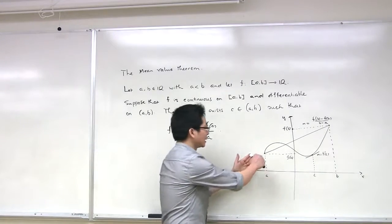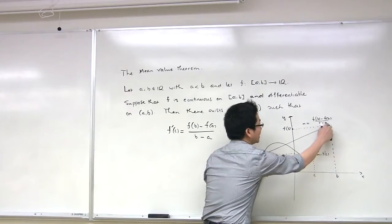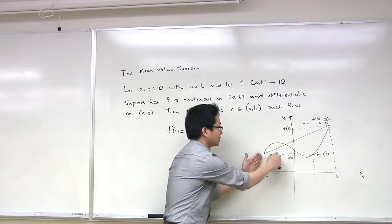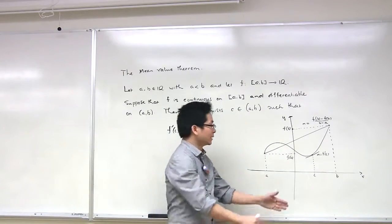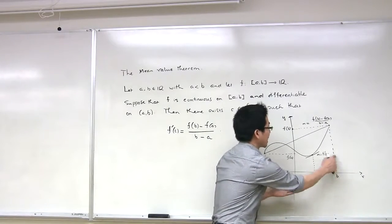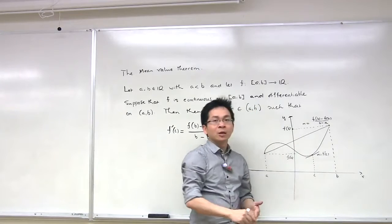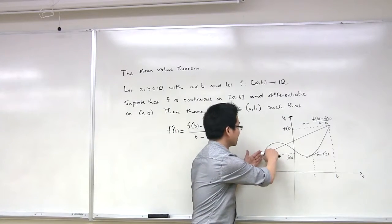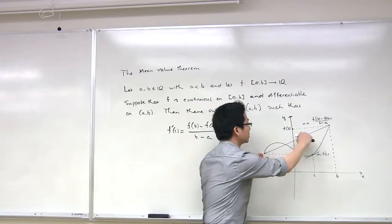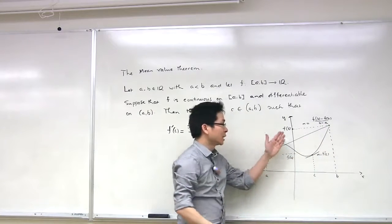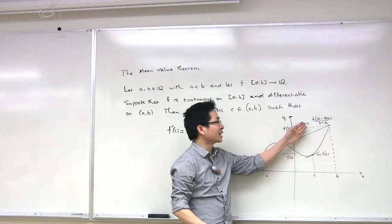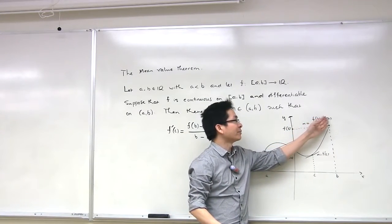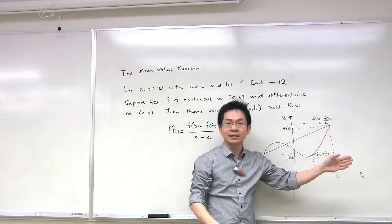This is the graph of the function y equals f(x). This is a and this is f(a). This is b and this is f(b). We are looking at the secant line connecting these two points. As you know, the slope of this secant line is given by f(b) minus f(a) over b minus a.